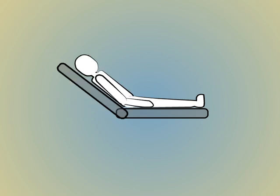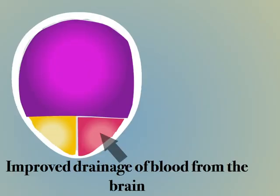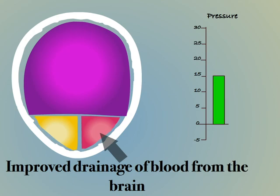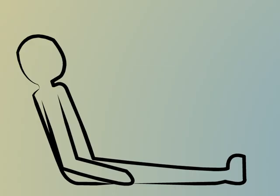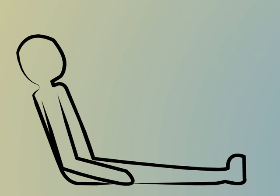If we sit a patient up, the opposite happens. This time gravity is our friend, working with the heart rather than against it. Drainage of the blood from the skull is improved, reducing the volume of blood and therefore the pressure. For the same reason we should aim to keep the neck straight and the head facing forward so as not to twist and obstruct the veins draining blood from the brain. Patient positioning can be an effective method for reducing intracranial pressure, as well as being low cost and low impact for the patient.